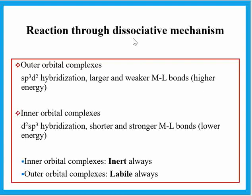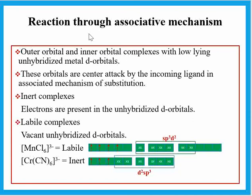So in summary for the dissociative mechanism with octahedral complexes: inner orbital complexes always form inert complexes, and outer orbital complexes are always called labile complexes. If the reaction takes place via associative mechanism, we use a different criterion to tell which complex is labile and which is inert.